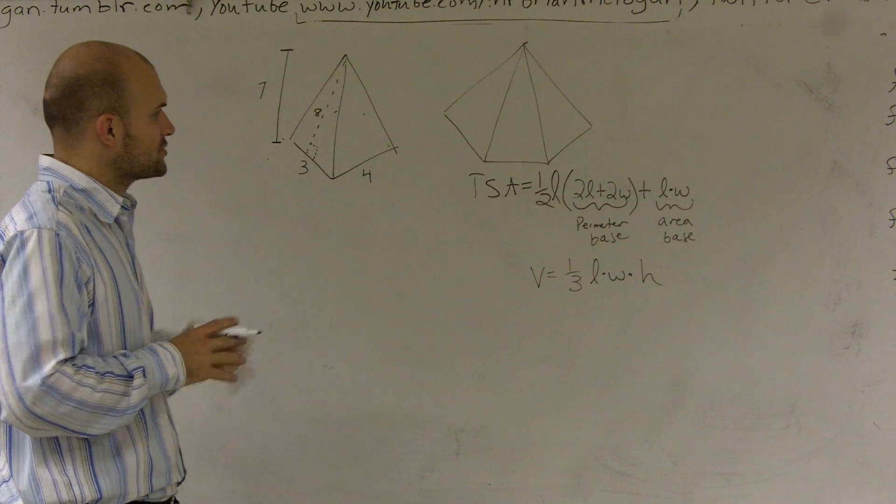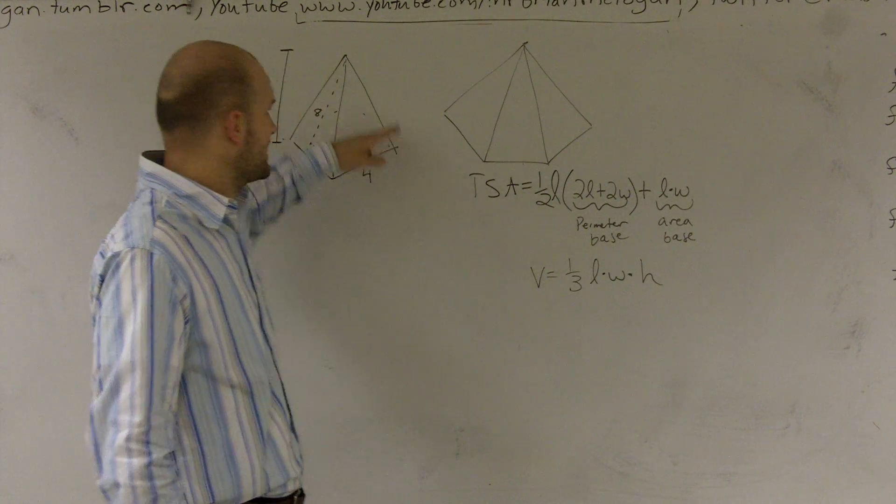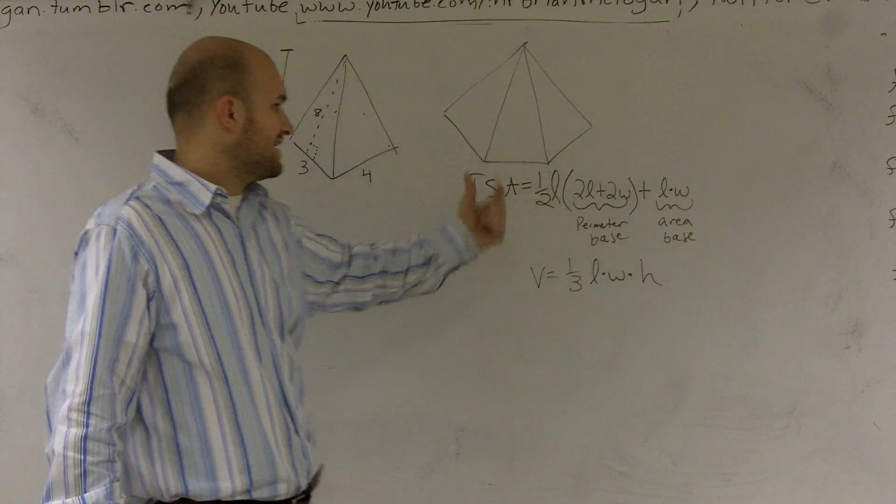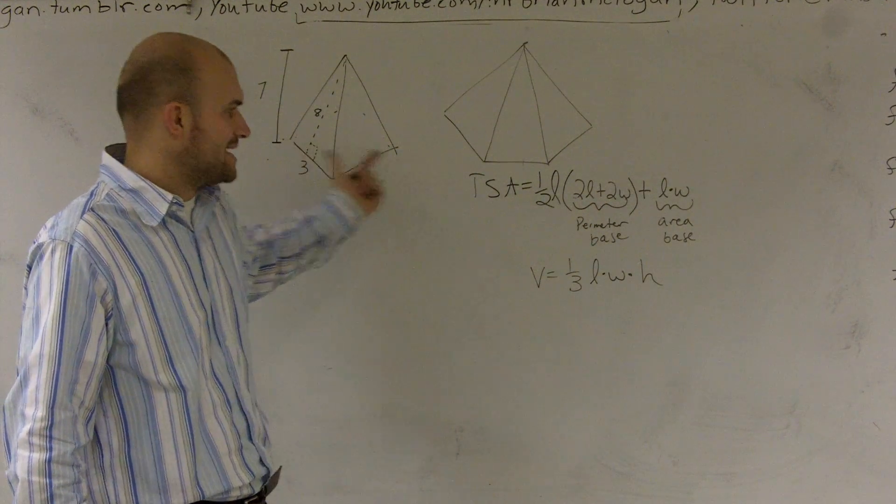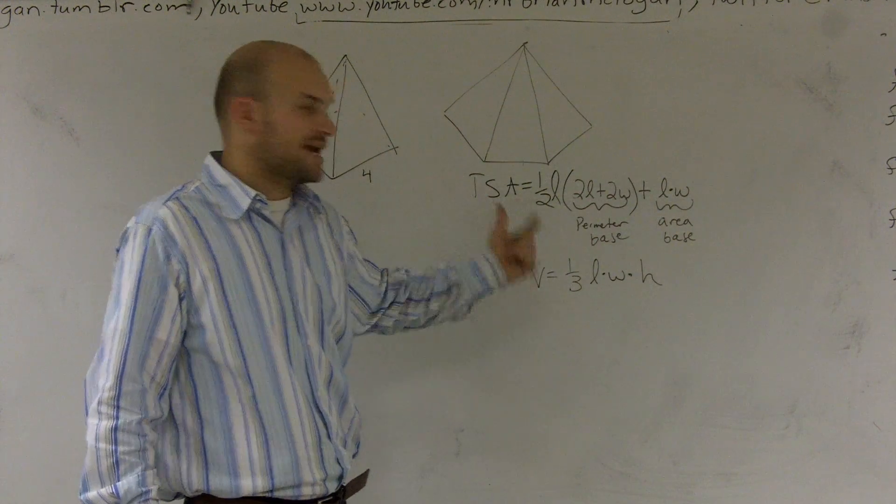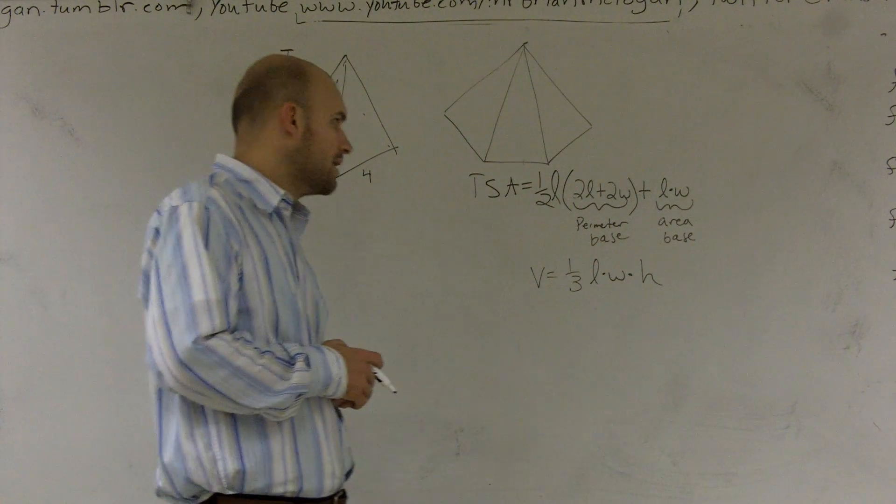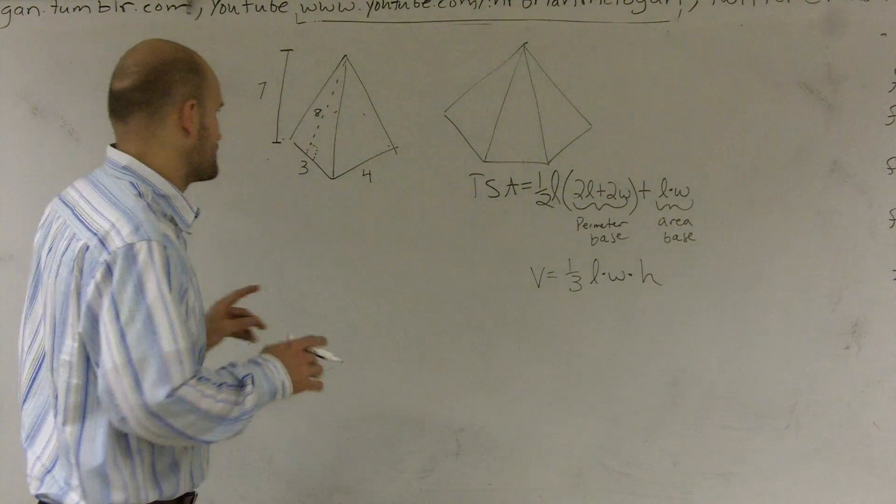Now I got it. So the total surface area is going to be 1 half times my length, which is the length of a side from the base to the tip, times the perimeter of my base. In this example, my perimeter is a rectangle, so that's that, times the area of my base, which is length times width. So let's go ahead and figure this out.